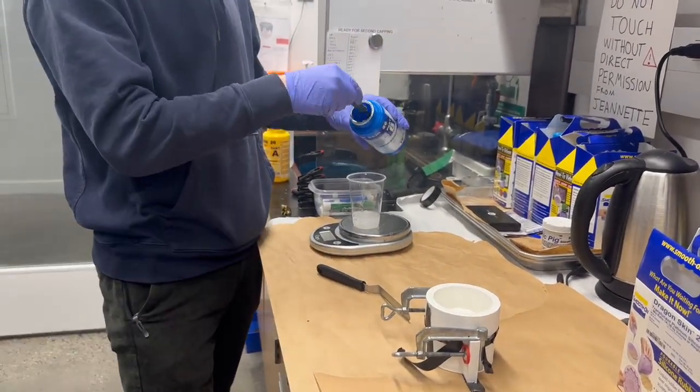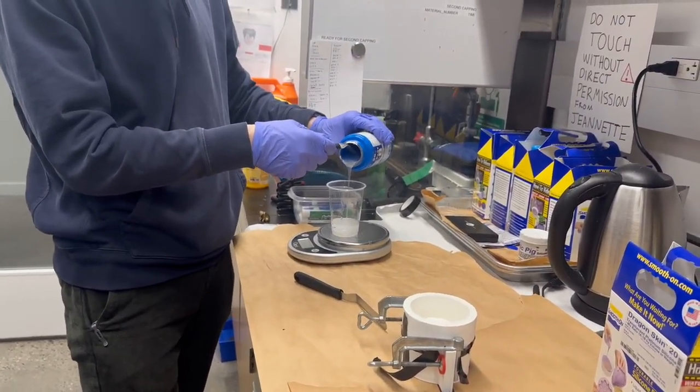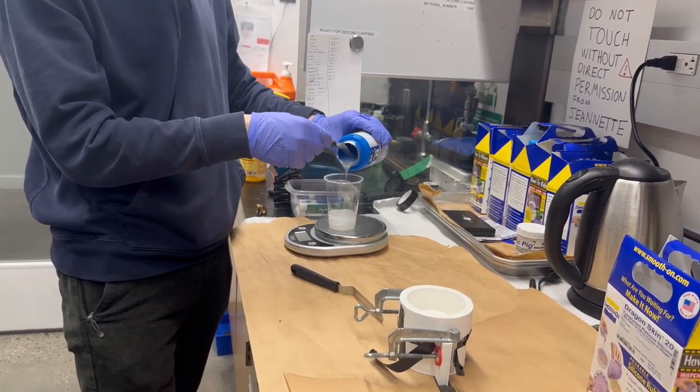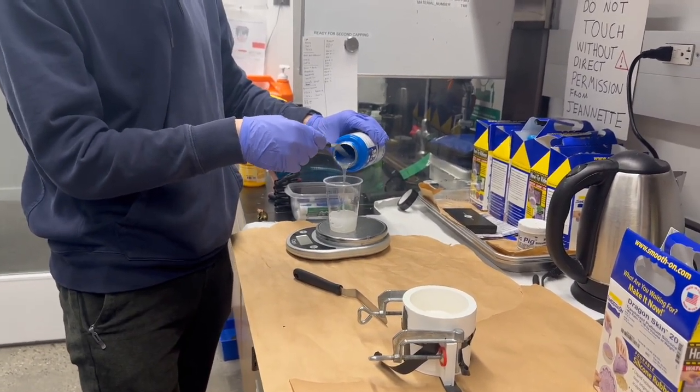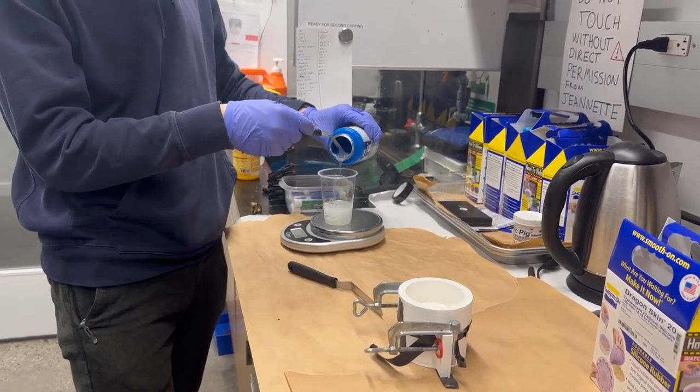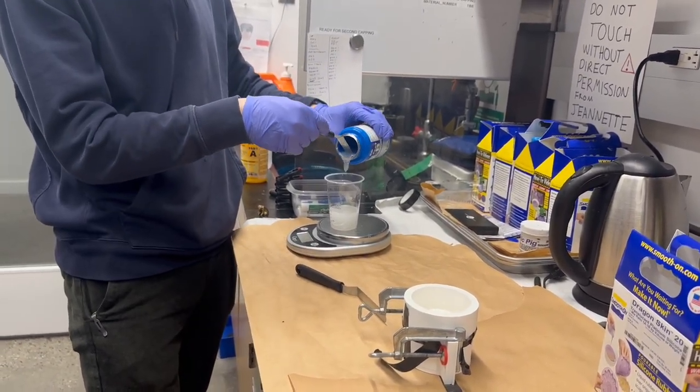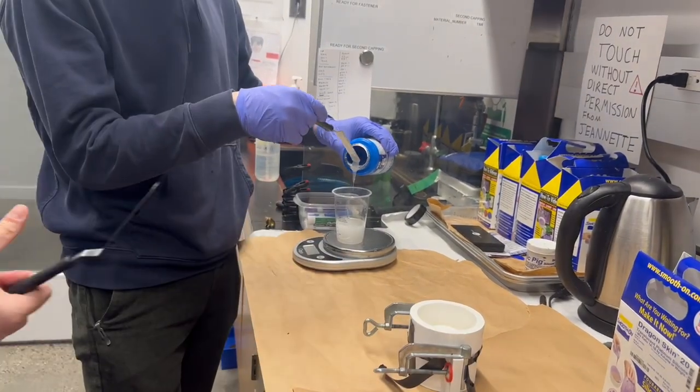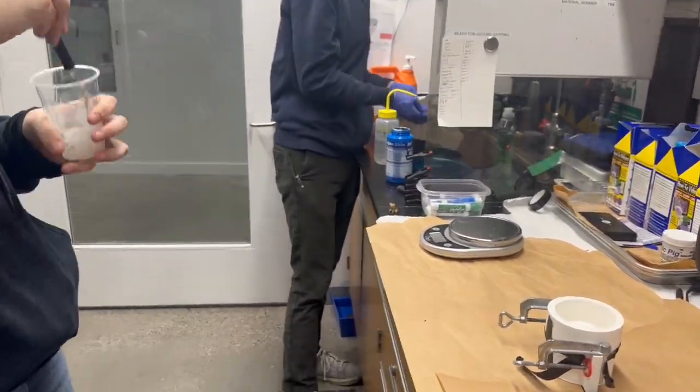After that, I swapped my gloves and used a clean tool to then pour in an equivalent amount of part B into the same cup. I'm just taking my time here because I don't want to overshoot the weight and then have to add more part A, as I would have to clean a whole new set of tools and swap gloves.